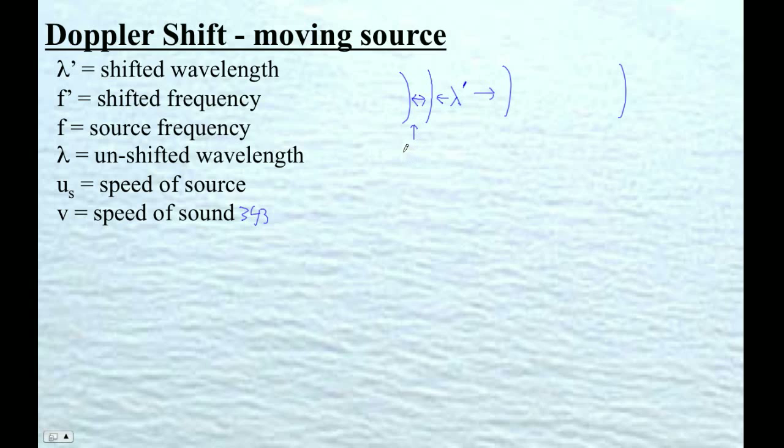And that distance there is going to be the speed of the source times the period, the time it takes between making one wave and making the next wave. And so the shifted wavelength is going to be the actual wavelength. This wavelength here is the unshifted wavelength. So that's going to be what the speed of sound times the period.